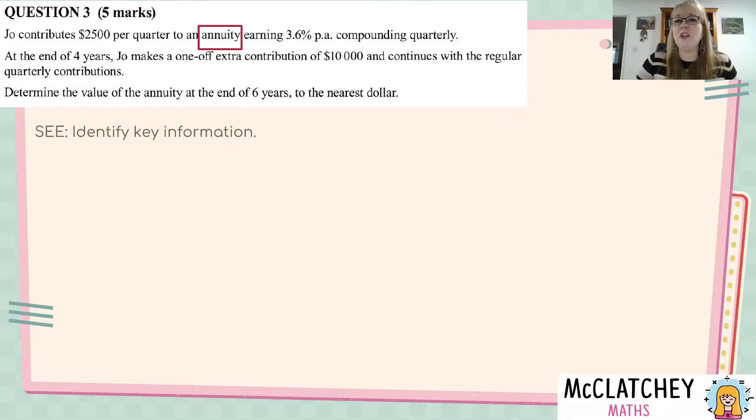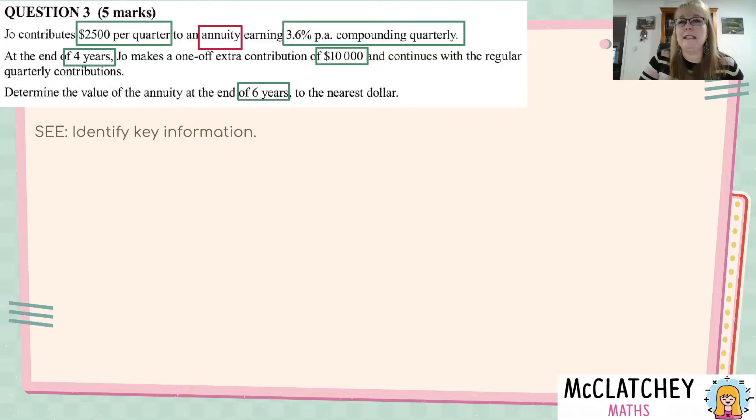So, because it's an annuity, we know we've got a choice of two different formulas to use. Some of the key information is all of these numbers about the different variables of the annuity. How much is being paid in with that regular payment? How much the interest rate is, which we'll need to convert to a quarterly rate?